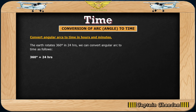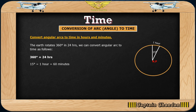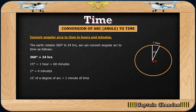So mathematically, in one hour there is a 15-degree difference in longitude. For example, if two places have a longitude difference of 15 degrees, they are one hour apart. Therefore, one degree of arc equals four minutes of time. More simply: 15 minutes of arc equals one minute of time, or 15 seconds of arc equals one second of time.